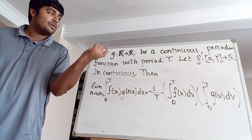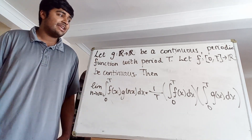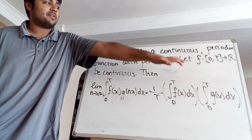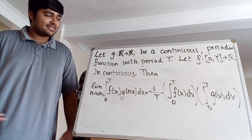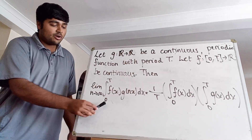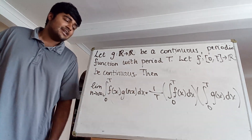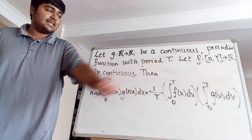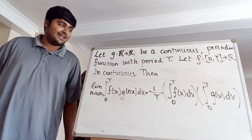What is this lemma? We have a function g from the reals to the reals which is continuous and periodic with period t. We also have a function f from [0, t] to the reals which is continuous. Then the lemma says that the limit as n goes to infinity of the integral from 0 to t of f(x) g(nx) dx equals 1/t times the integral from 0 to t of f(x) dx, times the integral from 0 to t of g(x) dx.